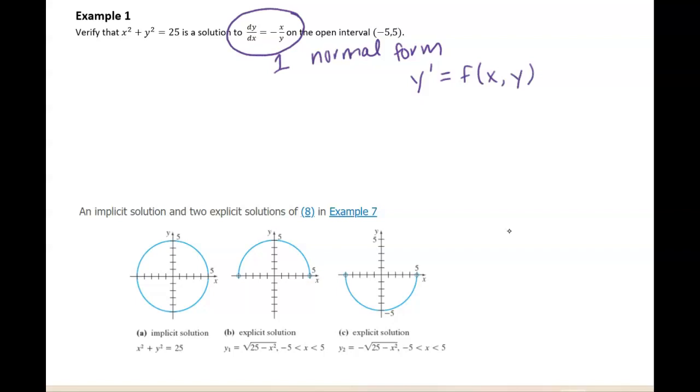All right, to verify that this circle, you can see down here in the graph, this circle is a solution, I'm going to take the derivative with respect to x and then plug in. So I'm going to do that implicitly, 2x plus 2y dy dx equals 0.